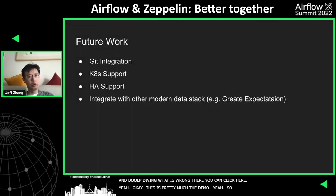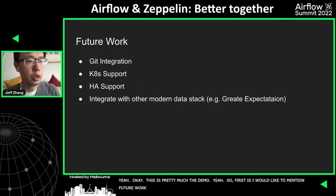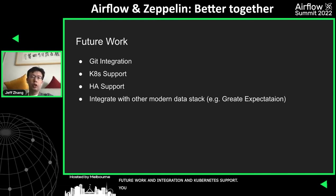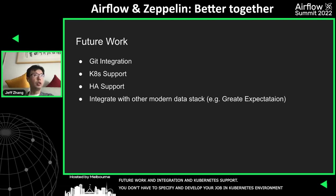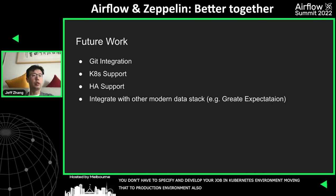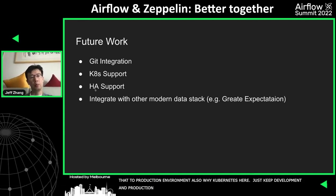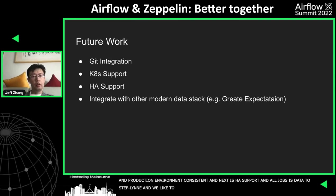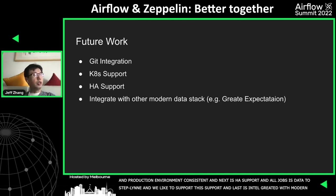The last thing I'd like to mention is some future work. The first is Git integration. The second is Kubernetes support — you don't need to specify where to launch your job on the Airflow side; all these things can be controlled on the Zeppelin side, so you can develop and run your job in a Kubernetes environment consistently. The third is HA support, since all jobs are dedicated to Zeppelin. The last is integration with other modern data tools, such as Great Expectations, so you can do data quality checks on the Zeppelin side as well.